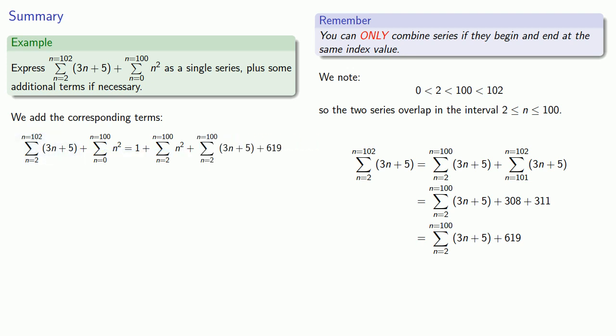Finally, because the two series have the same beginning and the same ending, we can combine them into a single series by combining the terms n squared plus 3n plus 5. We can also combine the numbers portion 1 and 619, and that gives us an expression for our summed series.